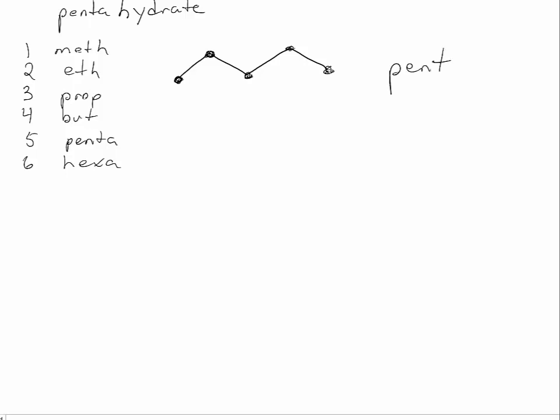So this has 5 carbons, so it's going to be pent- something. If it's all single bonds like it is now, then it's pentane. If it's got a double bond anywhere, then we would call it pentene. And if it's got a triple bond, then we would call it pentyne.